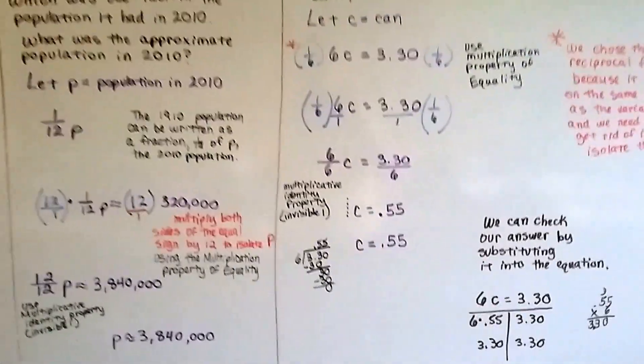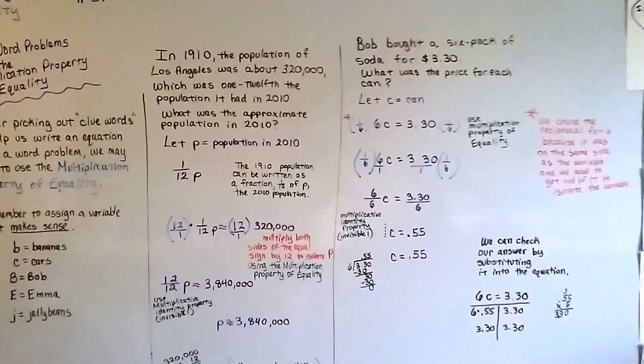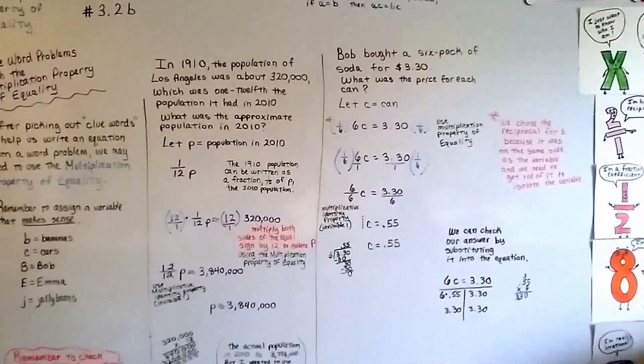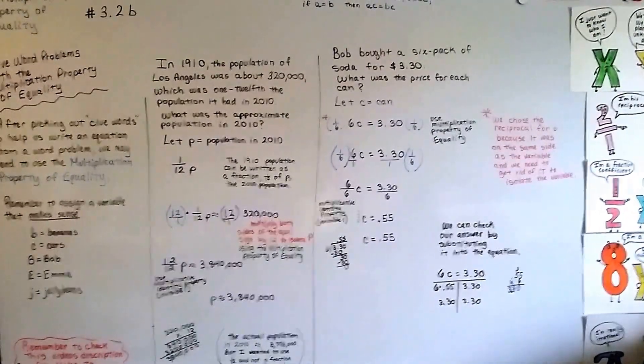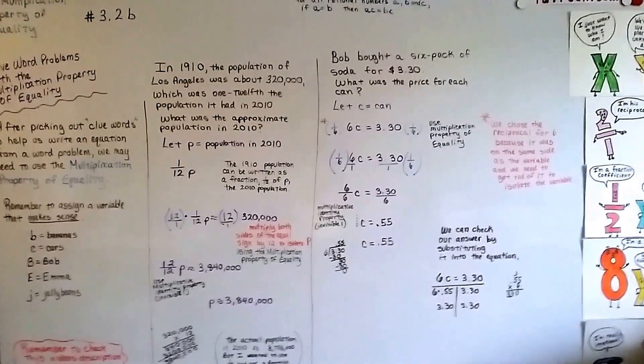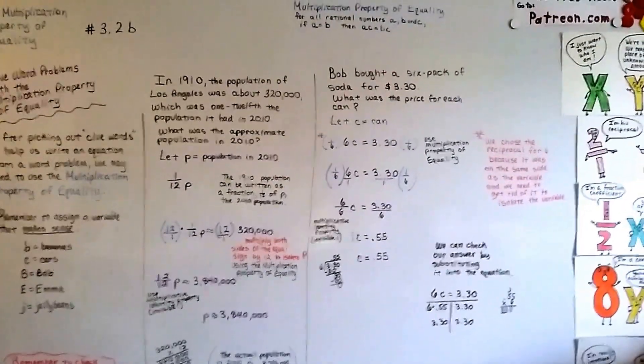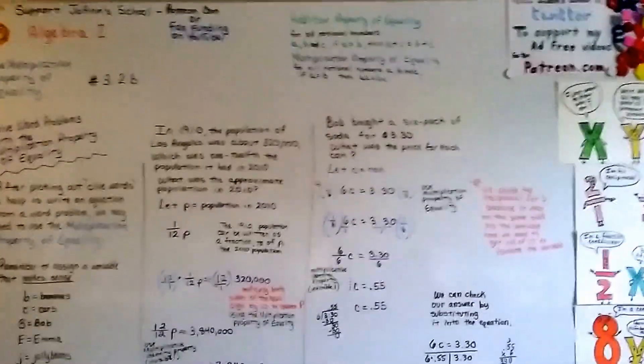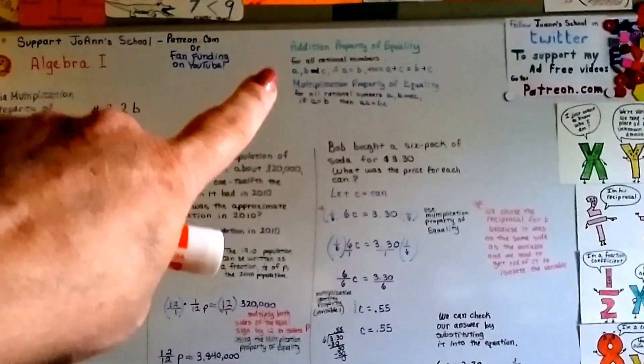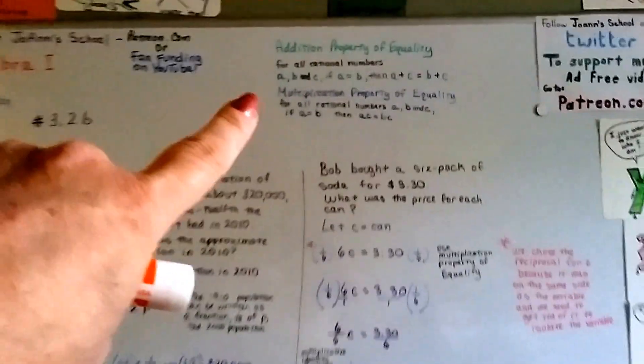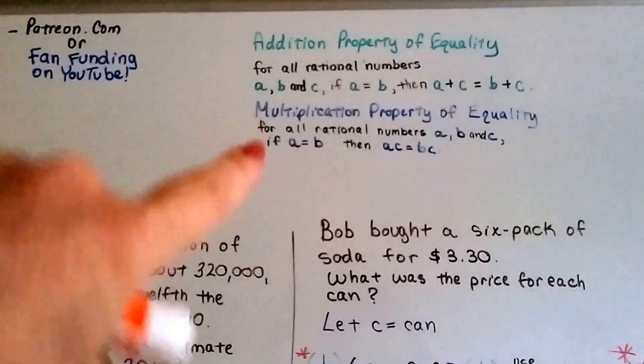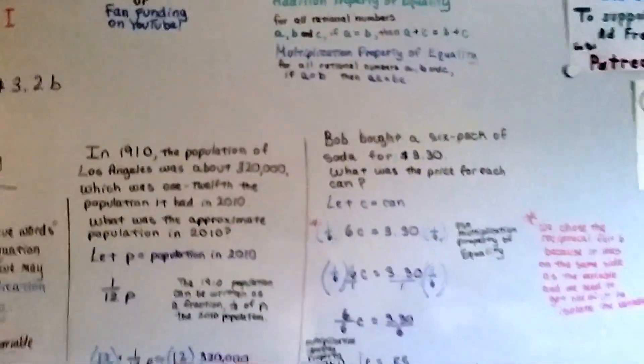So in our next video in 3.3a, we're going to use the multiplication property of equality, and we're going to continue on by putting it together with the addition property of equality. And we covered the addition property of equality and the multiplication property of equality. So in the next video, we're going to use both of these together. I'll see you there.